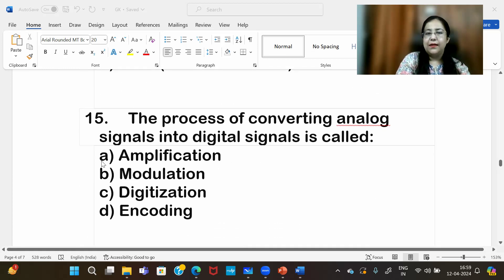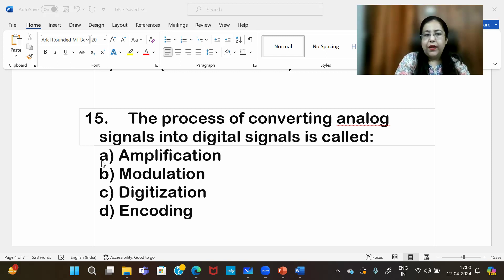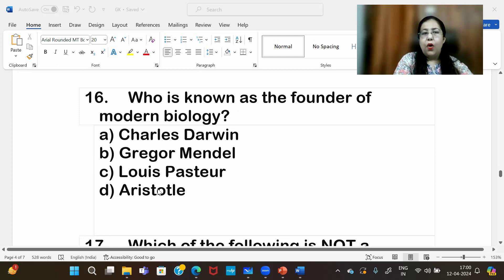The process of converting analog signals into digital signals is called digitization. When signals in your computer are digital, and when we send data in network it becomes modulation - digital to analog is modulation. When it comes back, we call it demodulation. We call it digitization. The right answer is option C.